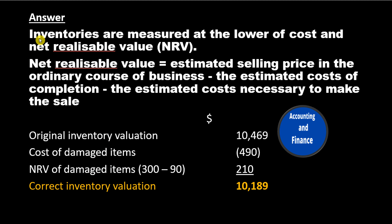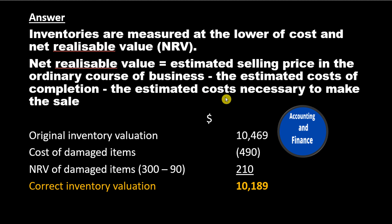Answer: Inventories are measured at the lower of cost and net realizable value, or NRV. Net realizable value equals the estimated selling price in the ordinary course of business, minus the estimated costs of completion, minus the estimated costs necessary to make the sale.